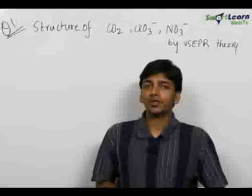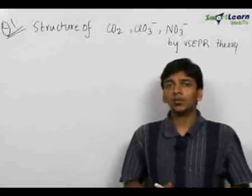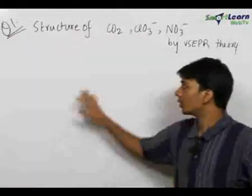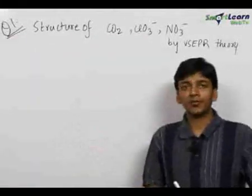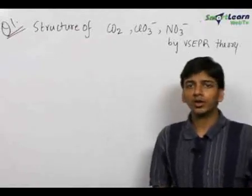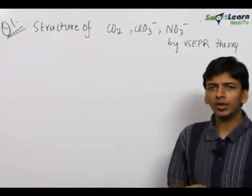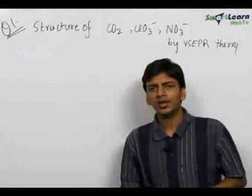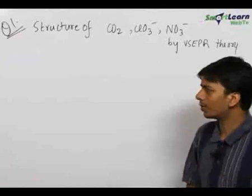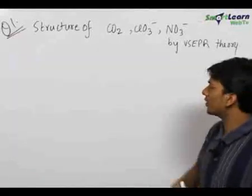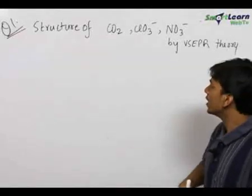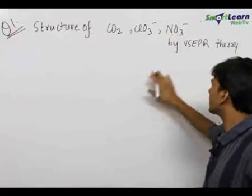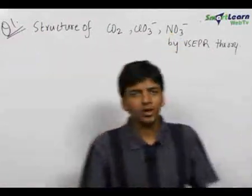The next chapter we deal with in chemistry is chemical bonding and molecular structure. We will understand the molecular structures of various compounds with the help of VSEPR theory and MOT theory, and we will also find out other things like dipole moment and the ionic nature of compounds. The first question we have is to find out the structure of CO2, ClO3⁻, and NO3⁻ using VSEPR theory.